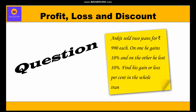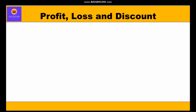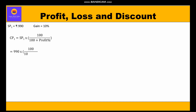In the first case, the selling price of one jeans is rupees 990 and gain is 10 percent. Cost price equals selling price multiplied by 100 upon 100 plus profit percent. Substituting the values: 990 × 100 / (100 + 10).